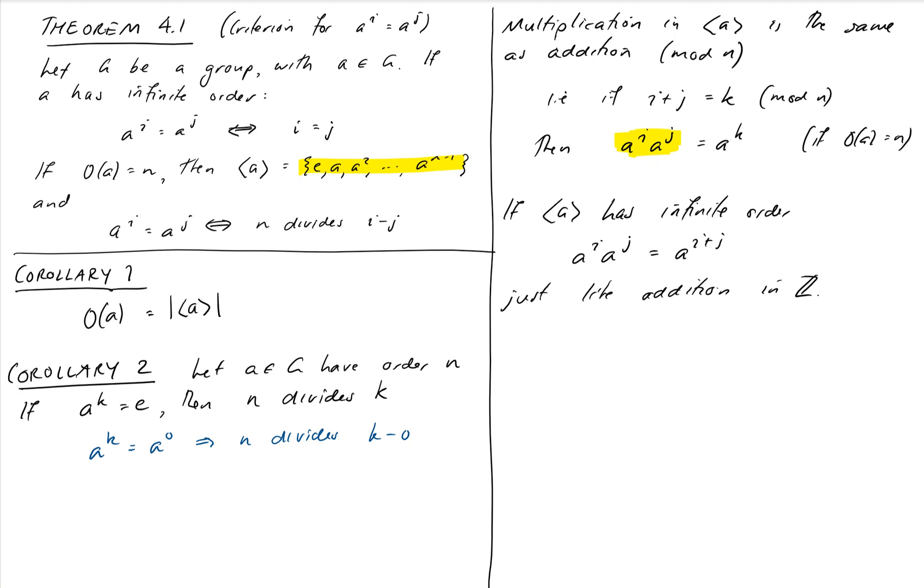So we'll show later on in the course that cyclic groups and integers, whether it's integers mod n or just integers, are essentially the same thing because the group operation works the same way. When we take a cyclic group and we compose two elements together, then they either add mod n if we've got a finite order element, that's this one here, or alternatively they add the normal way if our element has infinite order, so it's just like we're in the integers.